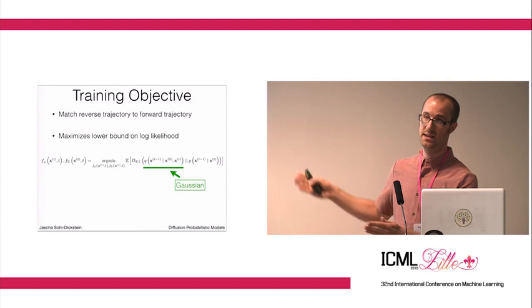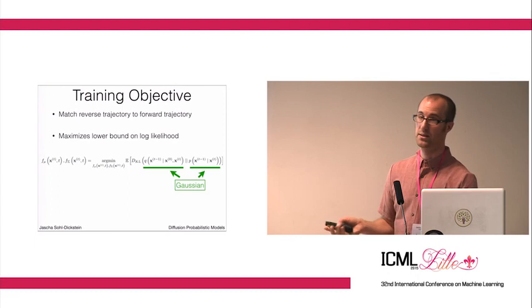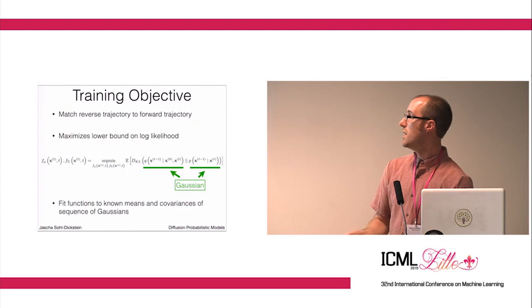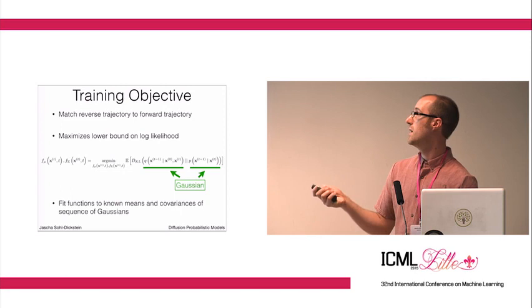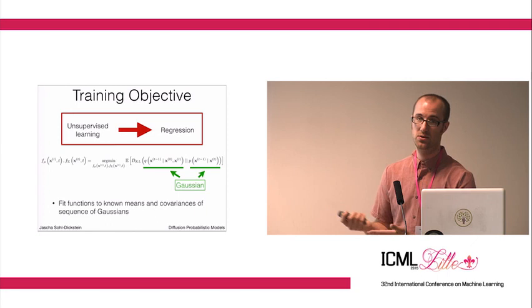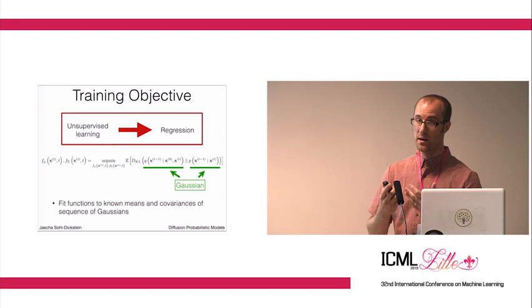Similarly, since we know that reverse diffusion processes have the same functional form, the single step in your reverse chain is also a Gaussian. So what our challenge becomes is to fit functions to the known means and covariances of this sequence of Gaussians. This turns the unsupervised learning problem into a regression problem where you need to fit a regressor to predict the mean and covariance of each step as a function of t.